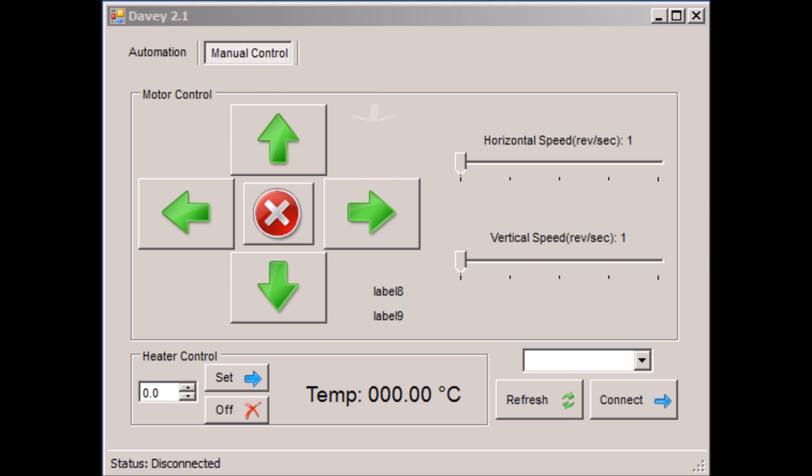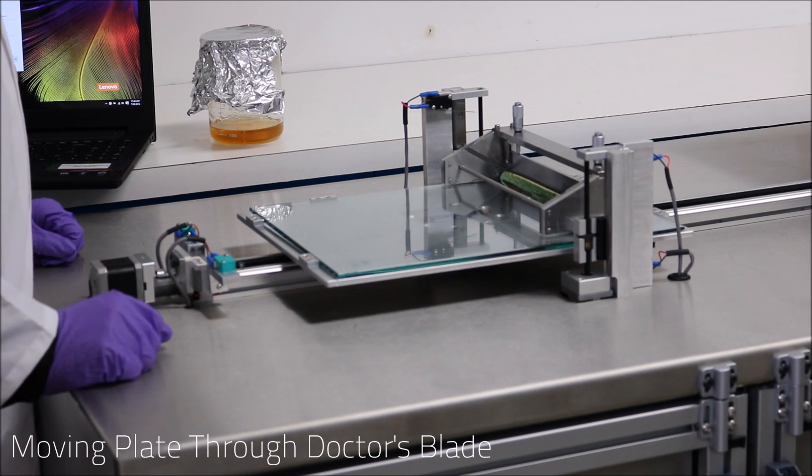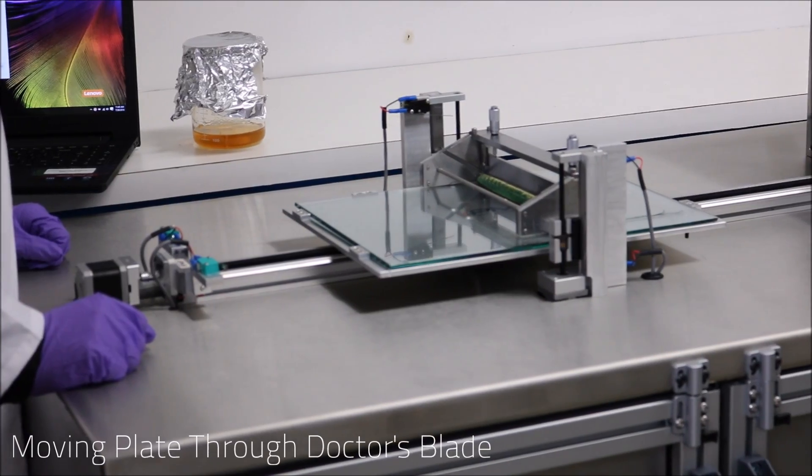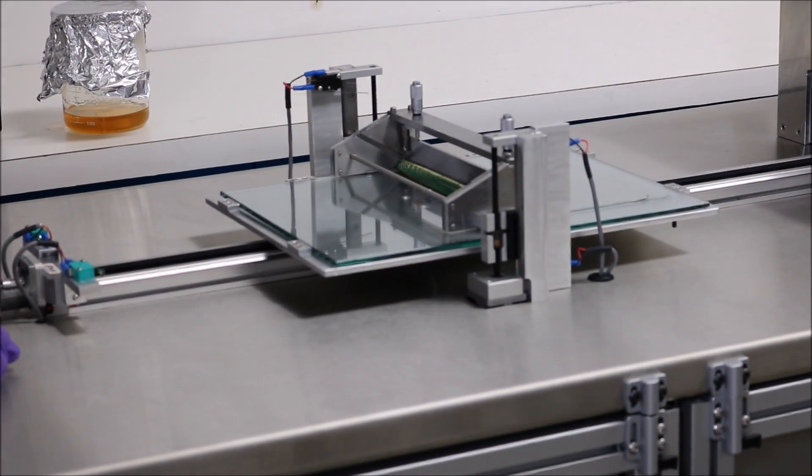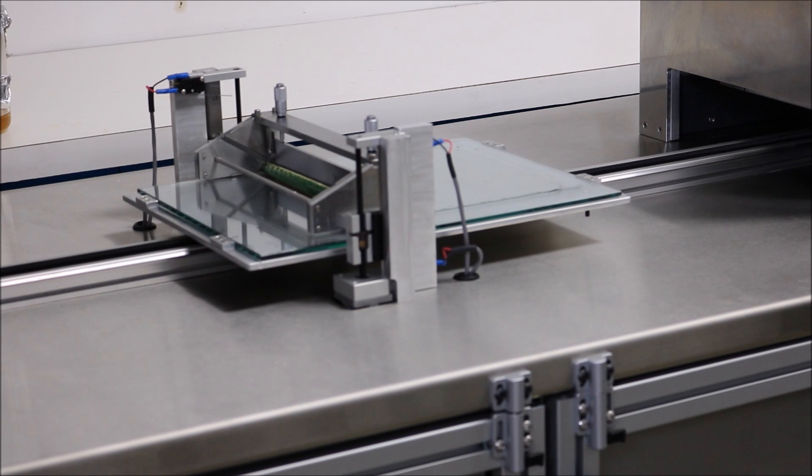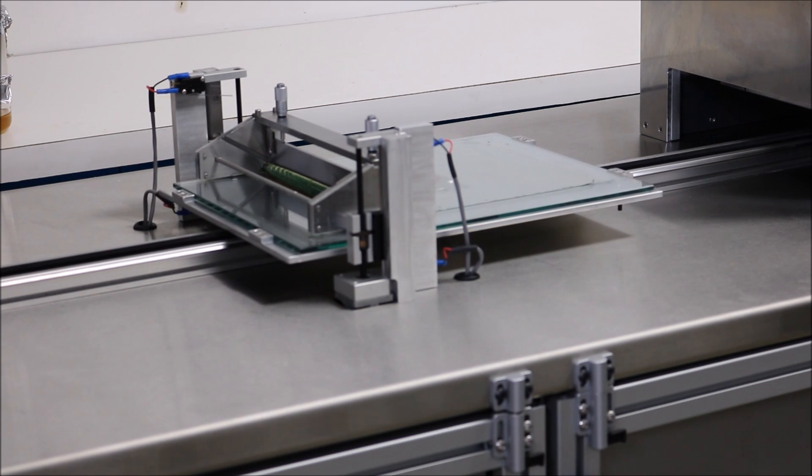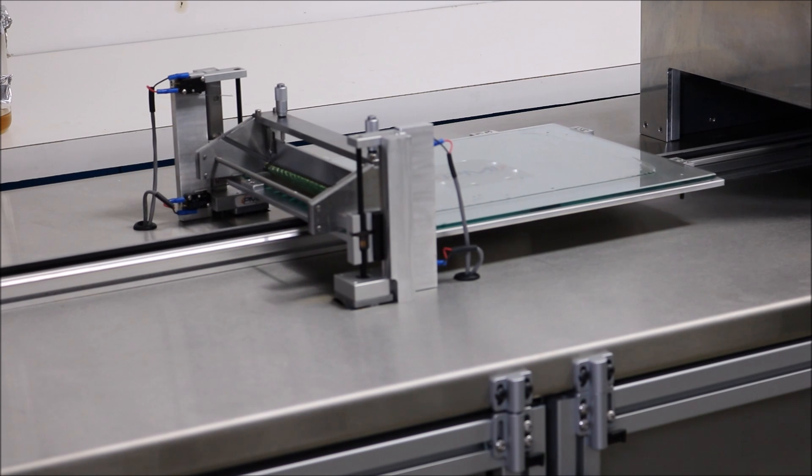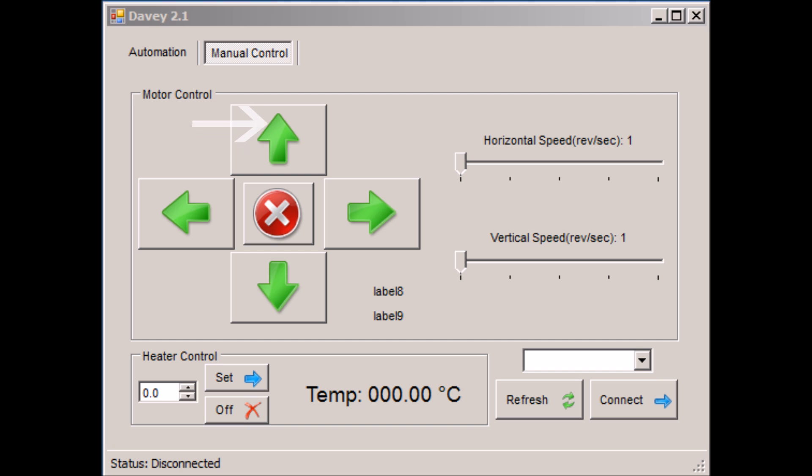Now we want to tell the program to begin moving the membrane casting plate through the doctor's blade. When the membrane casting plate is approximately all the way through, we want to stop and raise the doctor's blade up. This will prevent any excess polymer solution from falling behind.